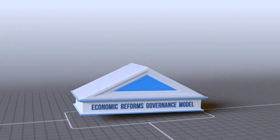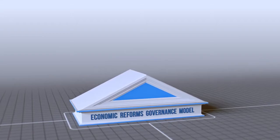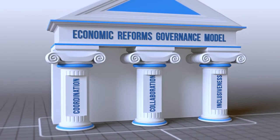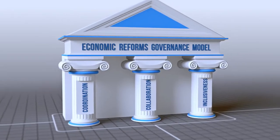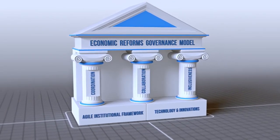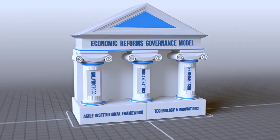The new reformed governance model is based on three pillars: coordination, collaboration, and inclusiveness, and aims to improve the country's business environment. An agile institutional framework, technology, and innovation are key enablers for achieving this prominent goal.